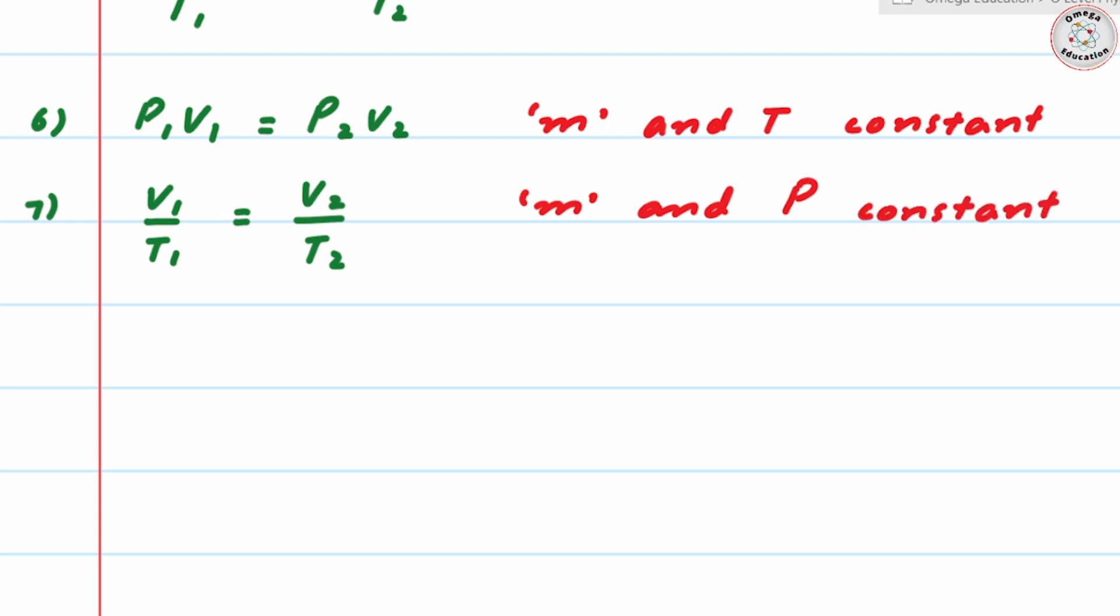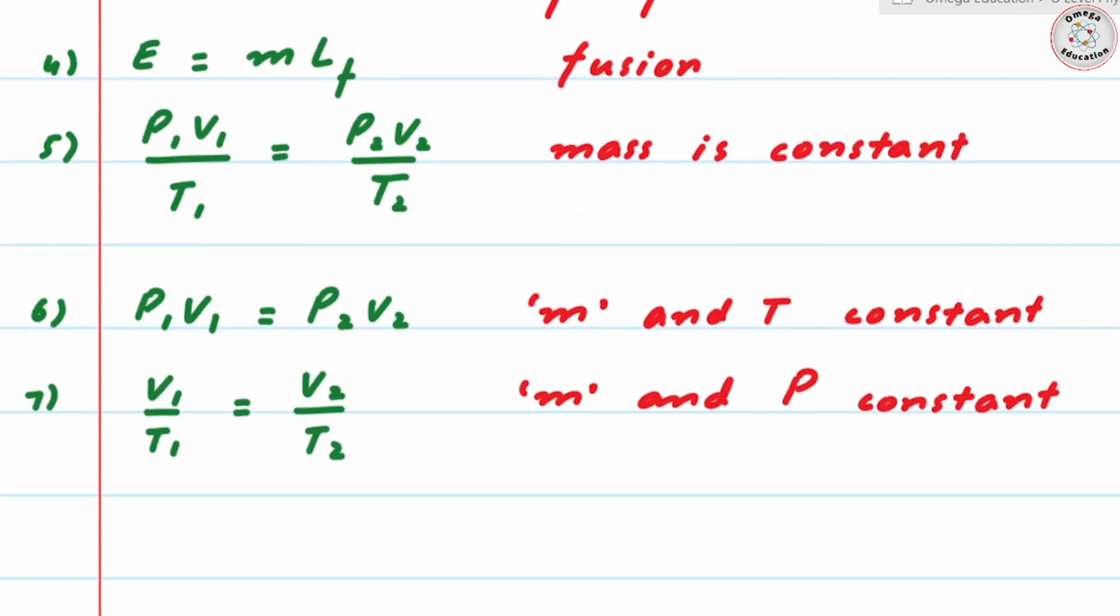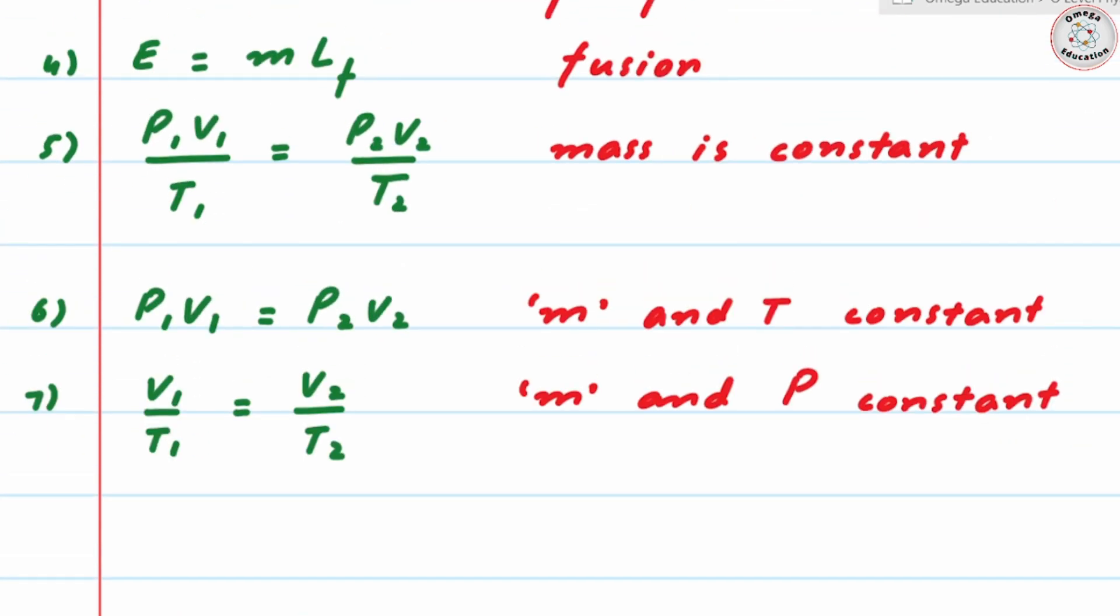It can also be used with pressure and temperature, but generally you don't get questions in which you have to relate pressure and temperature. If you get question like this you can still use P₁/T₁ = P₂/T₂, but in that case mass and volume would then remain constant.